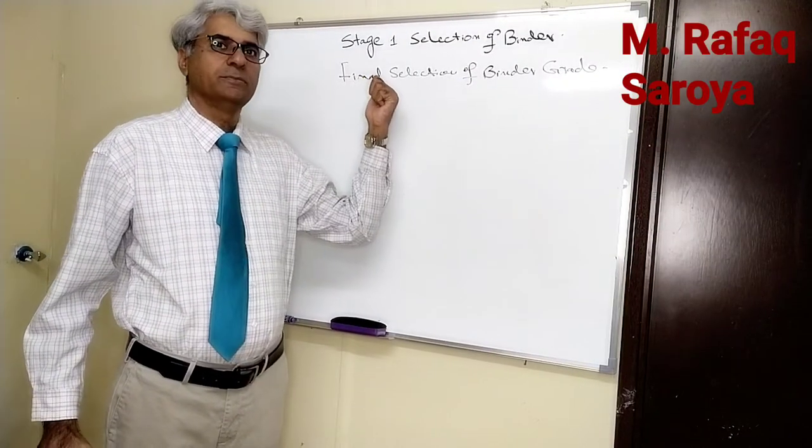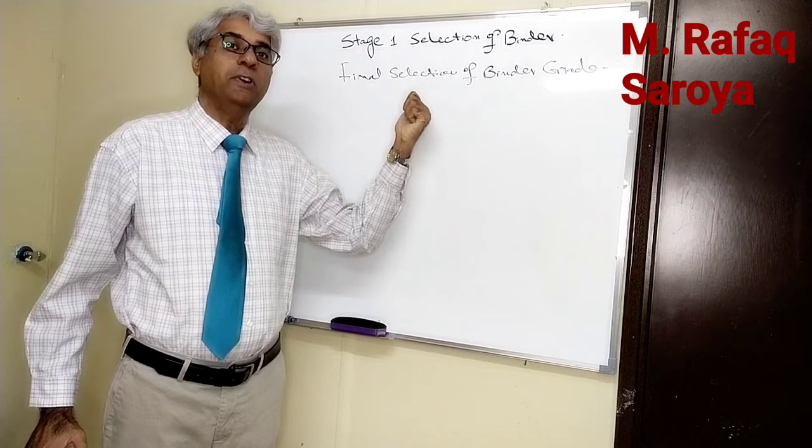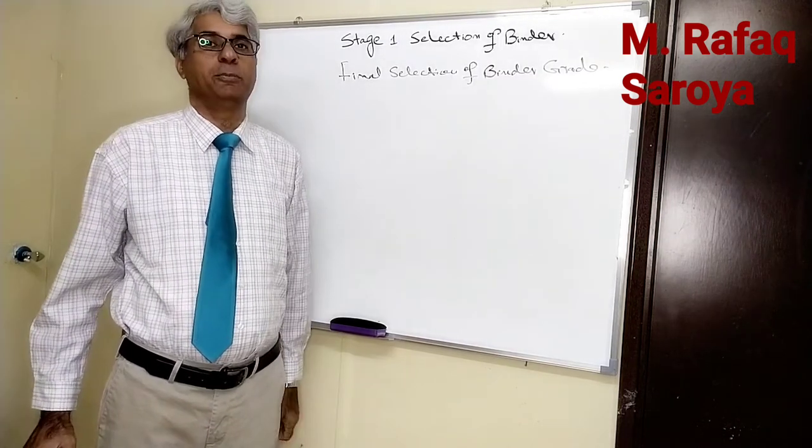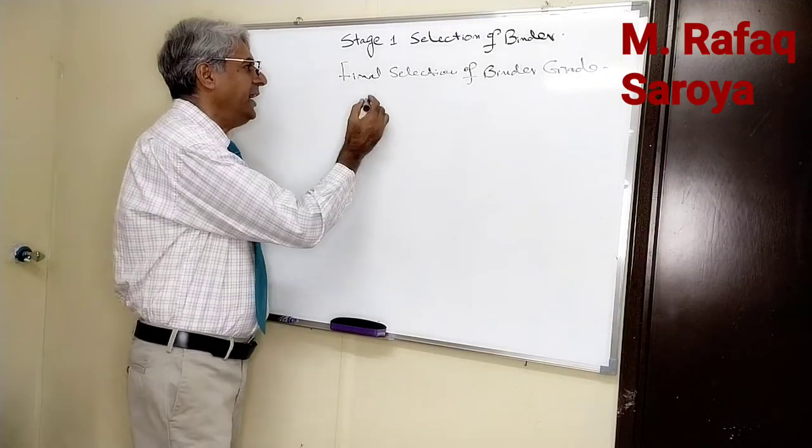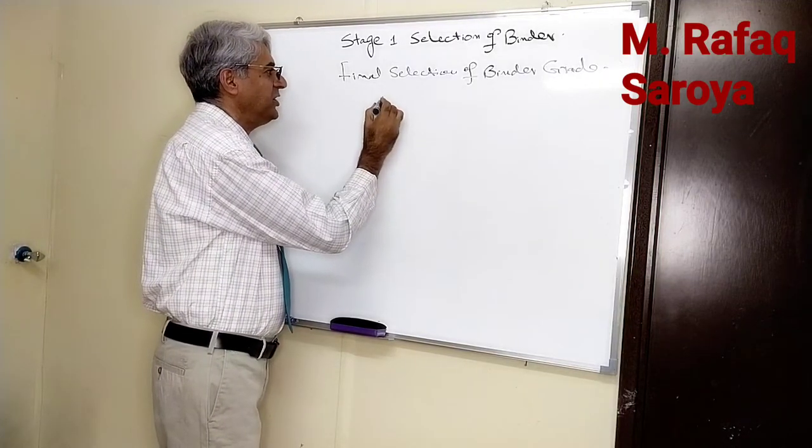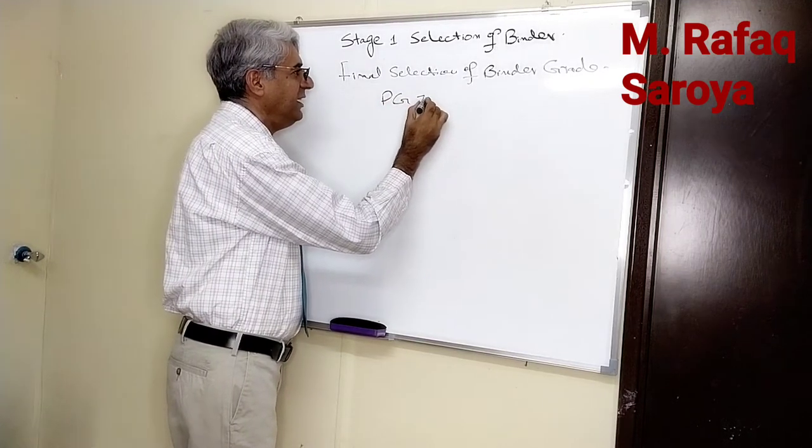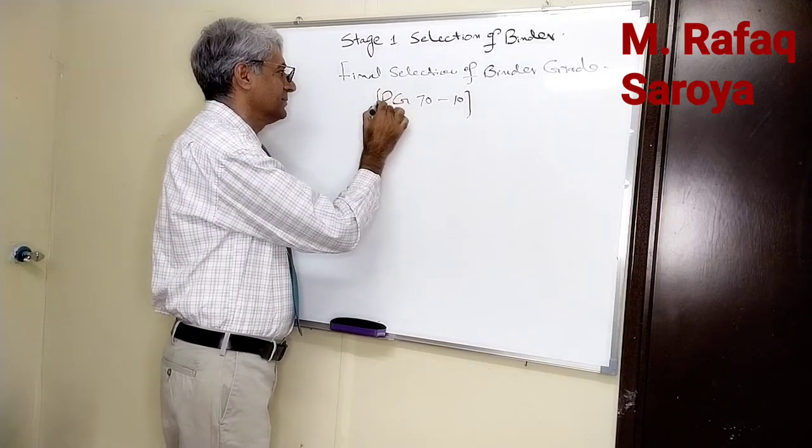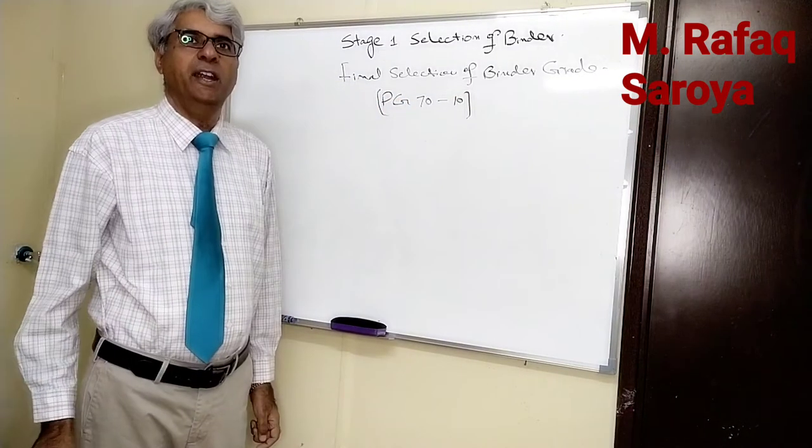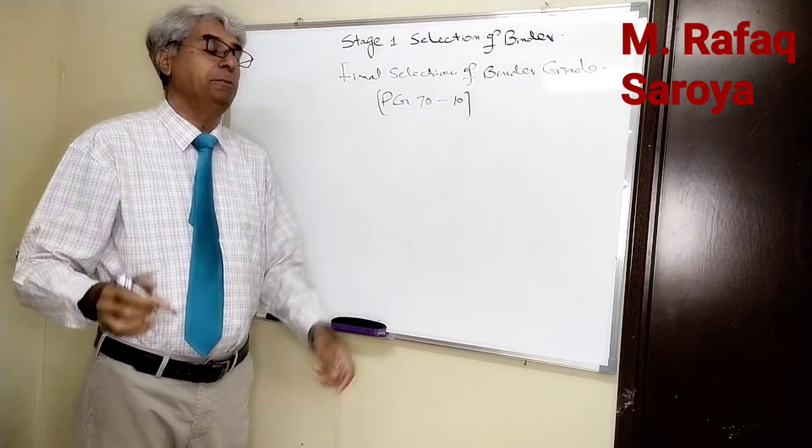I will explain the final selection of our final grade. In my previous video, I told you by calculation the value of the PG grade comes out to be 70 negative 10. At that time I told you this is not final. Now let me tell you the reason why it is not final.